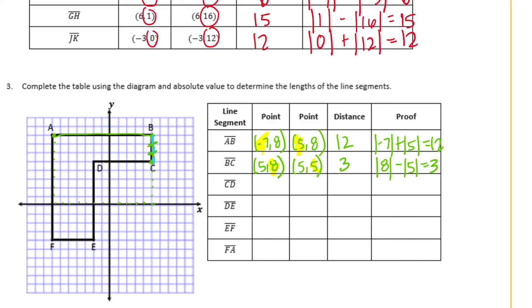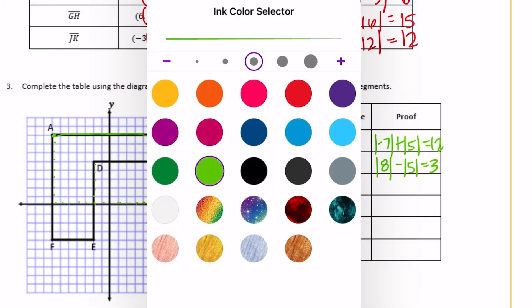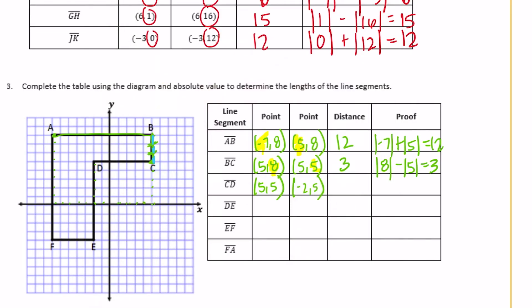Segment CD: C was at 5, 5 and D is at negative 2, 5. They are different in the x-coordinate, and they're on opposite sides of 0 — one is negative, one is positive. So we add: absolute value of 5 plus absolute value of negative 2 equals 7. They are 7 units apart.